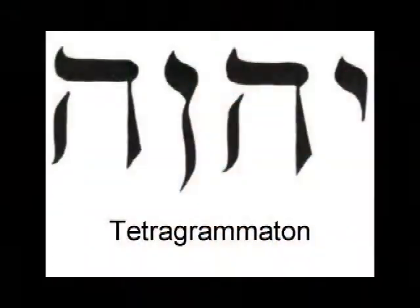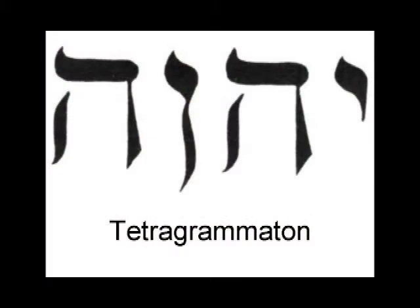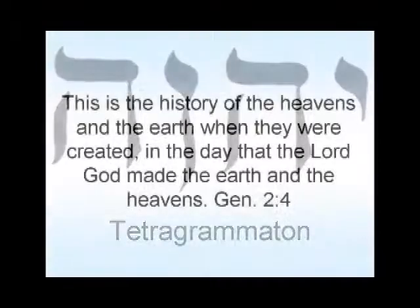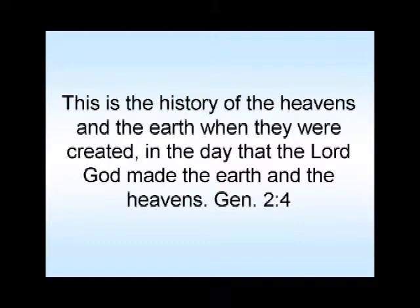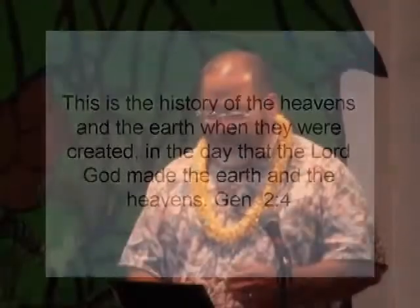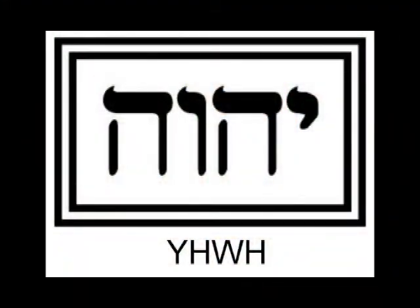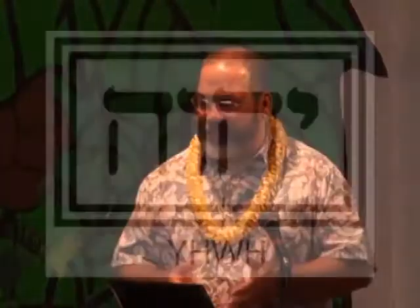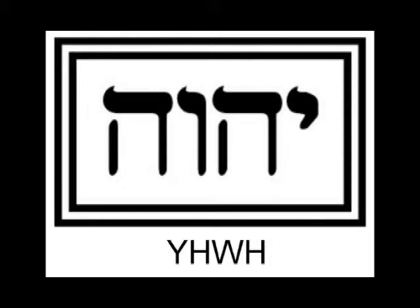We put this slide up last week — the Tetragrammaton. This is the holy and divine name of God. Those letters mean YHWH. That's where we get the name Yahweh from, or the name Jehovah. We'll spend time in the weeks to come developing that, but it comes from these four letters — YHWH — the holy name of God.